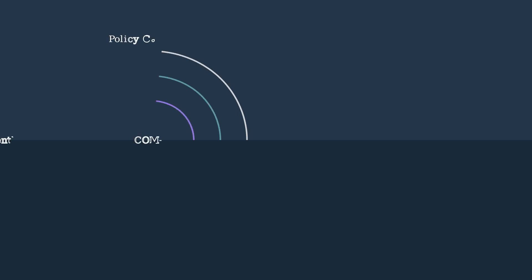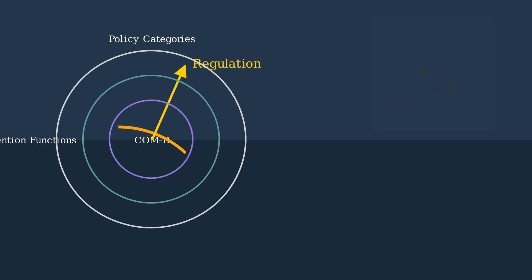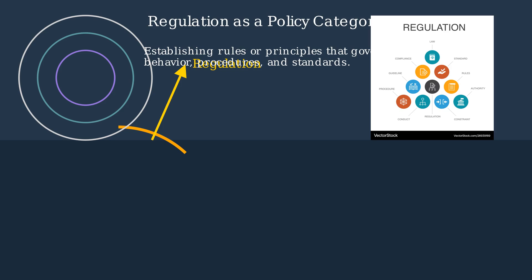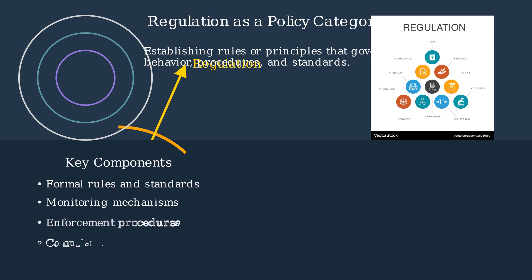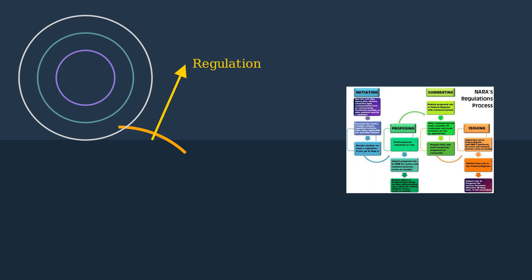Let's explore regulation as one of the policy categories in the behavior change wheel. Regulation is positioned in the outer wheel of the framework. It involves establishing rules, principles, and standards that govern conduct or procedures. Key components of regulation include formal rules, monitoring mechanisms, enforcement procedures, and compliance incentives. The regulatory process typically involves multiple steps: initiating, proposing, gathering comments, and issuing final regulations.